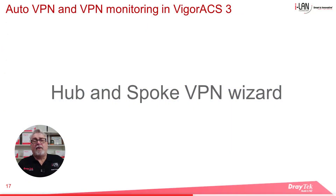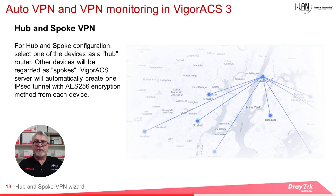Moving on to hub and spoke VPNs — the hub and spoke is the most used scenario for a corporate environment with a head office and multiple sub-offices. VigorACS3's AutoVPN takes care of VPN creation. You just need to specify the hub router, select the spoke routers from the list, select an encryption type, and ACS3 does the rest.